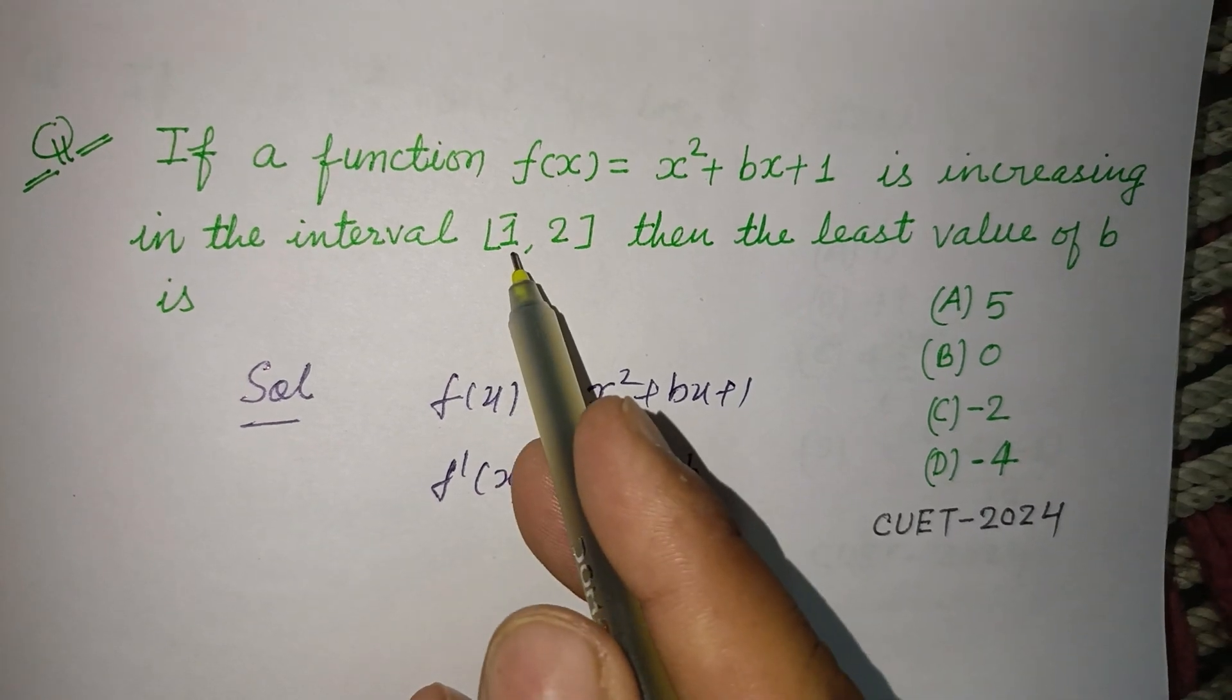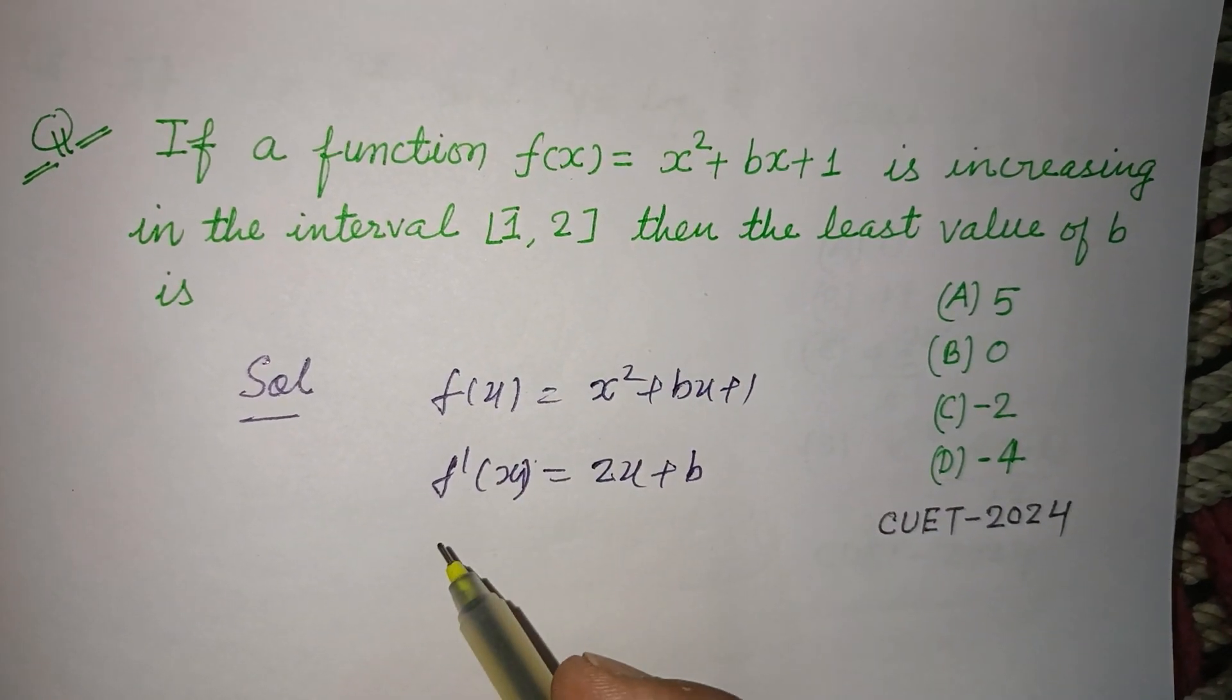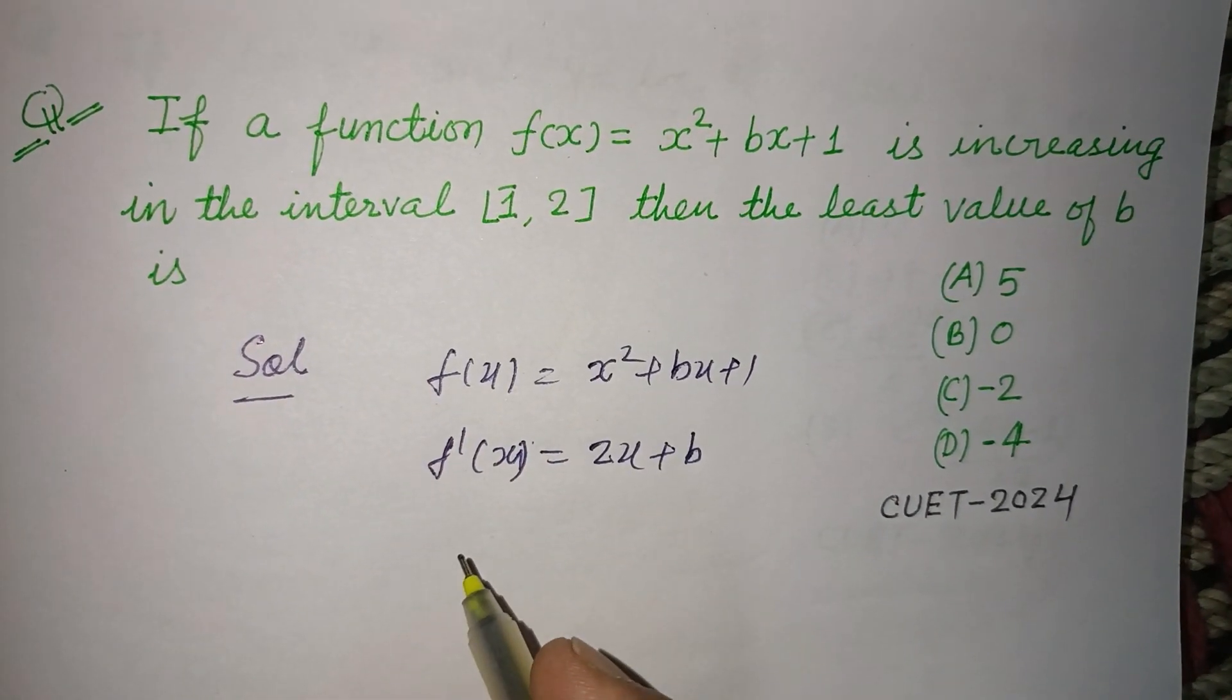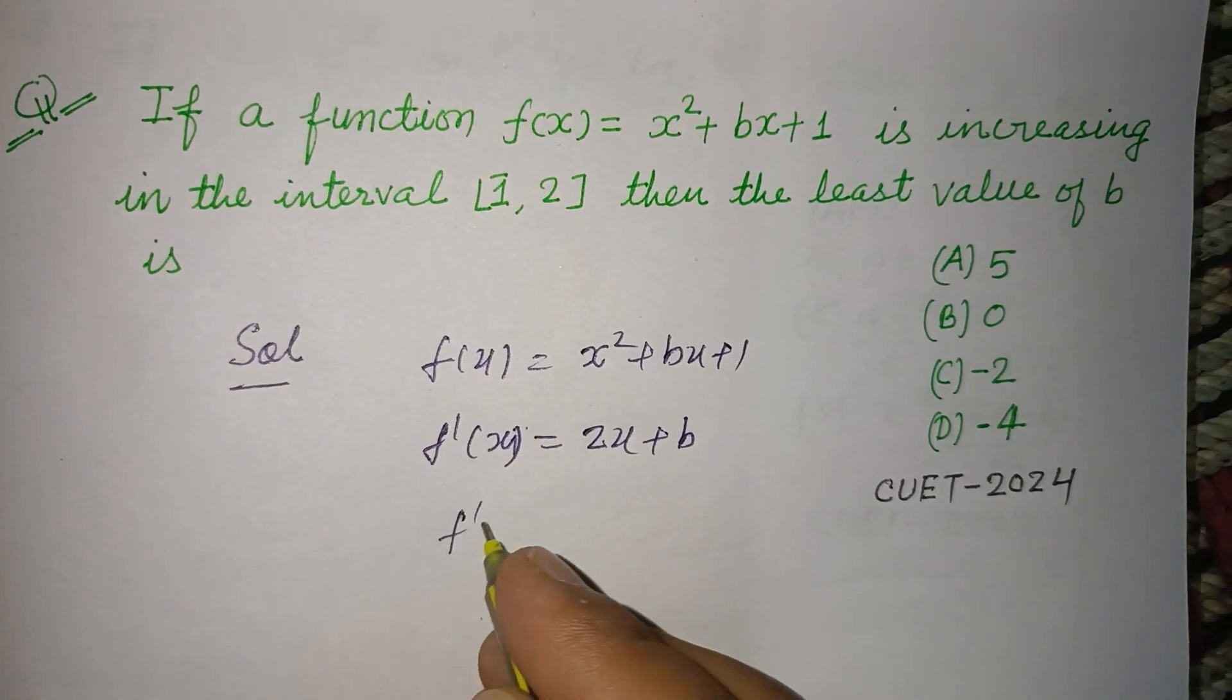And here [1, 2] - the function is increasing in this interval [1, 2]. Therefore, f'(x) equal to 0.